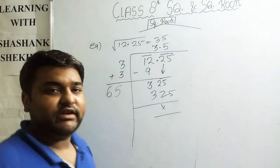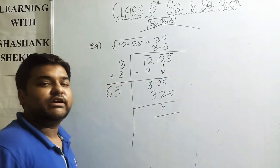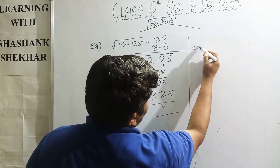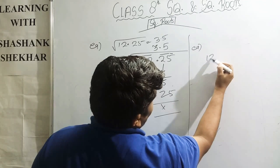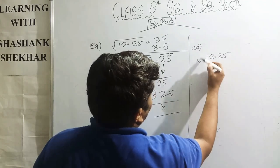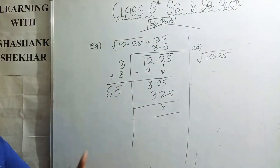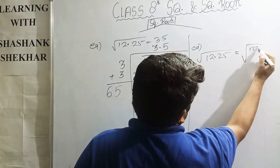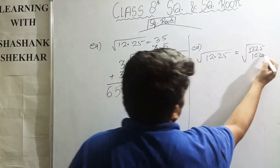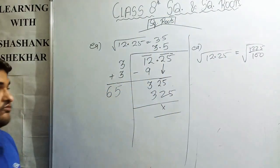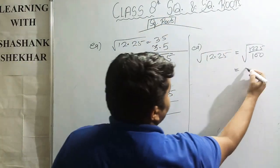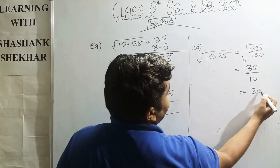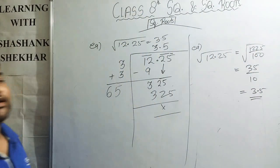Alternatively, to find the square root of 12.25, we can find the square root of 1225, which is 35, and divide by the square root of 100, which is 10. So the answer is 35 ÷ 10 = 3.5. That is the final answer.